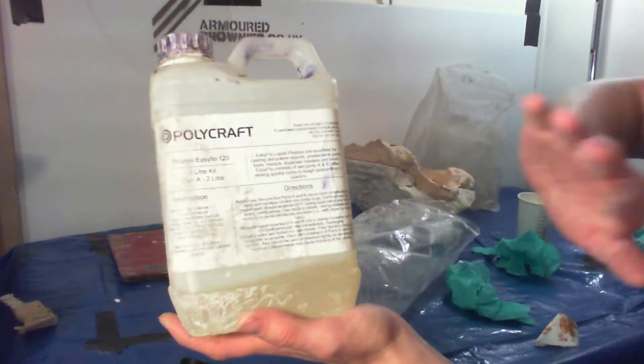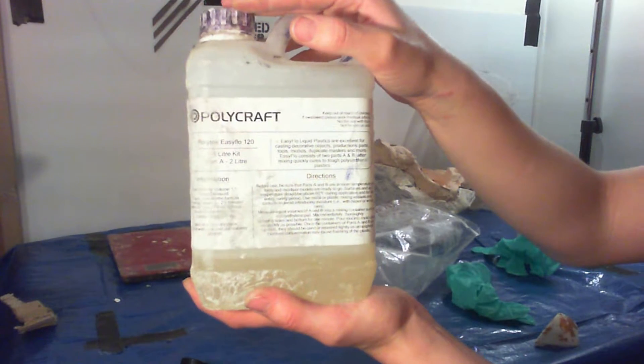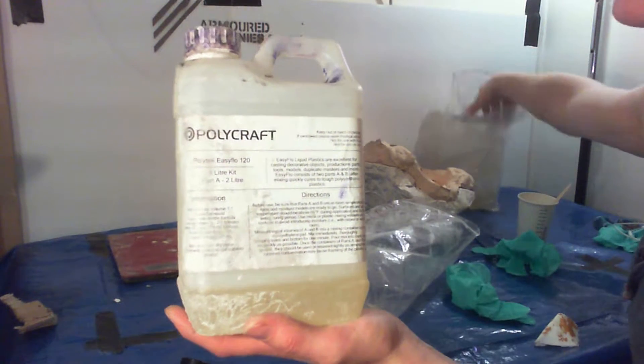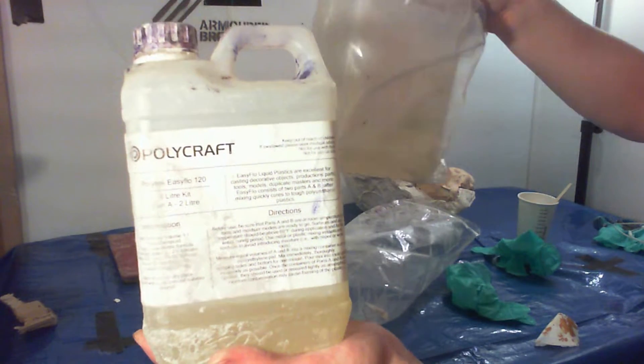First, introductions. This is Polytech Easy Flow 120, it's a two-part polyurethane rotocast resin. Now, those are a lot of words, and if you're new to this it's probably quite scary, but I want to show you just how easy this is to work with.